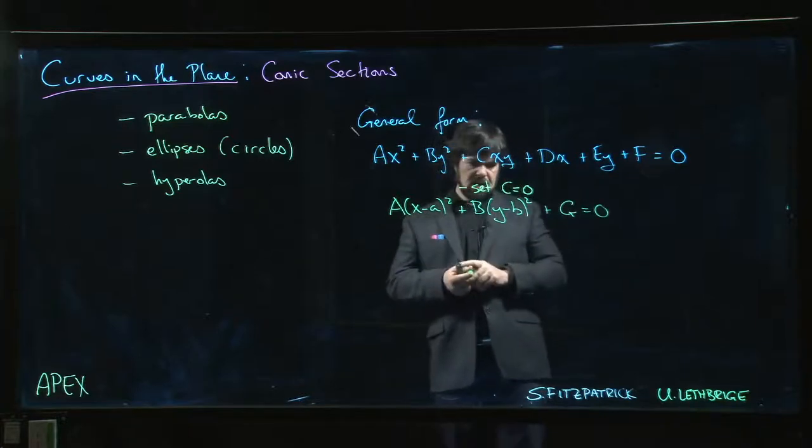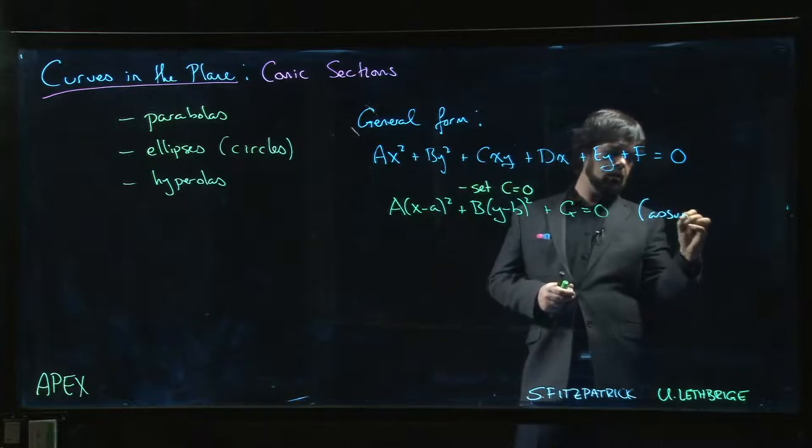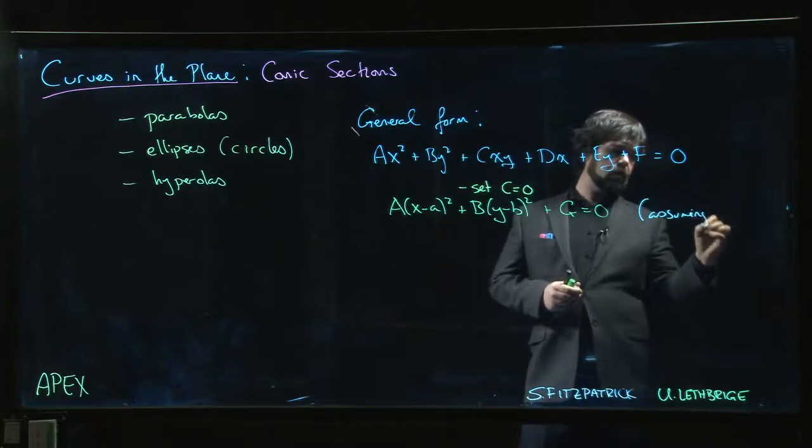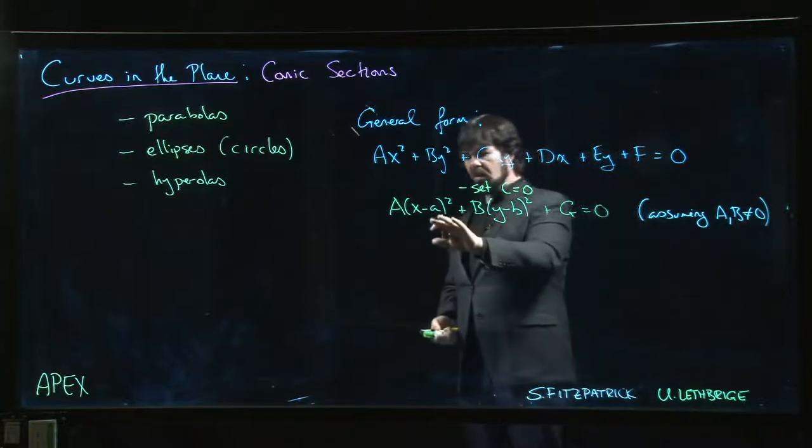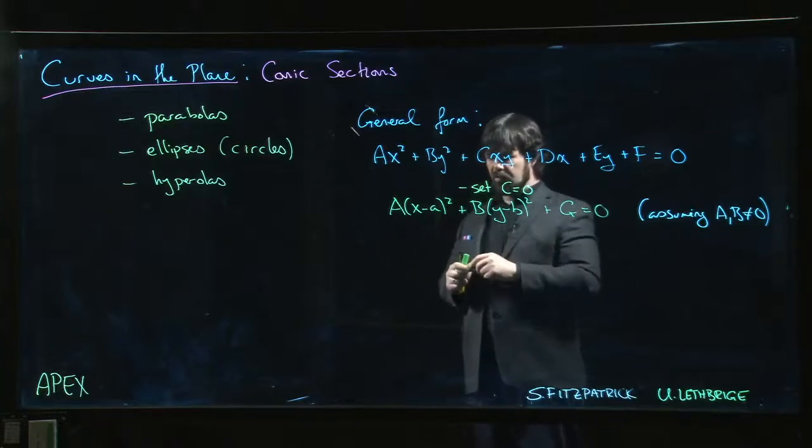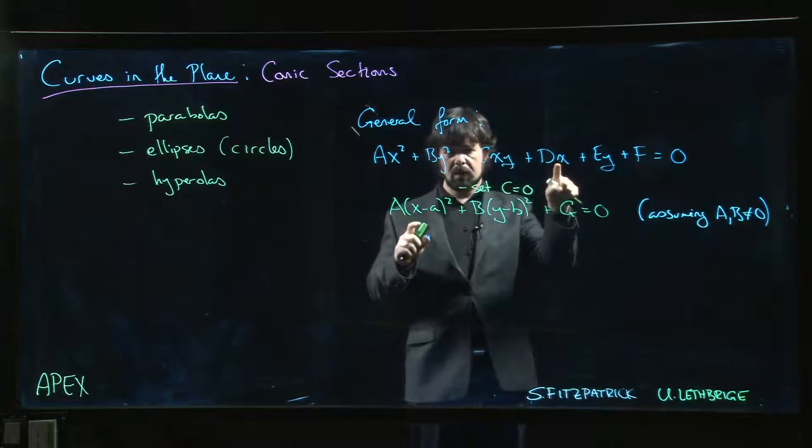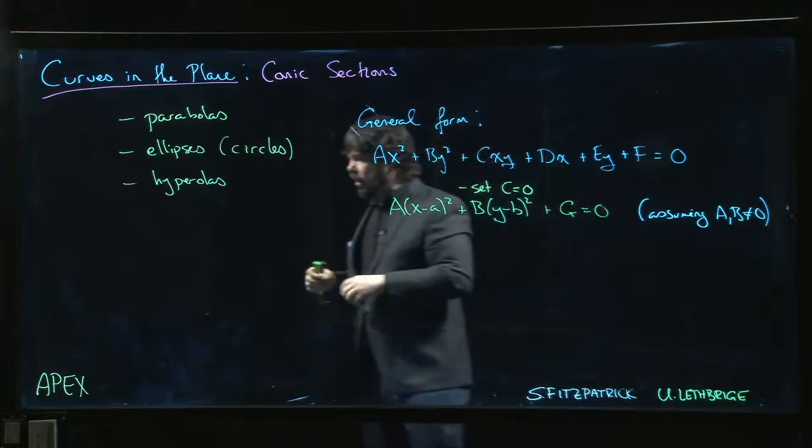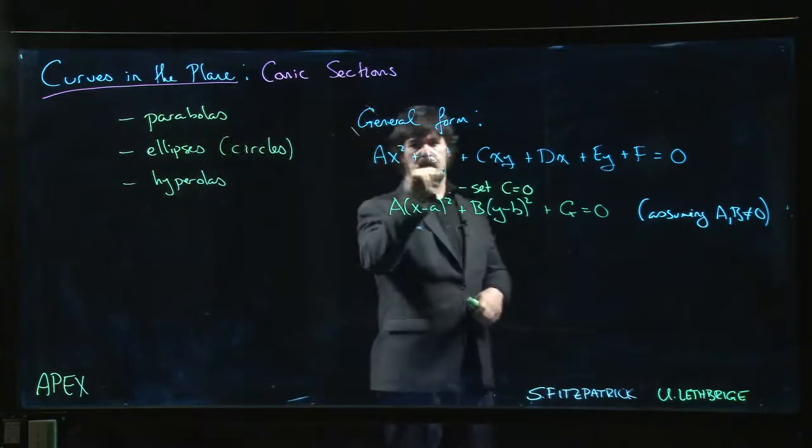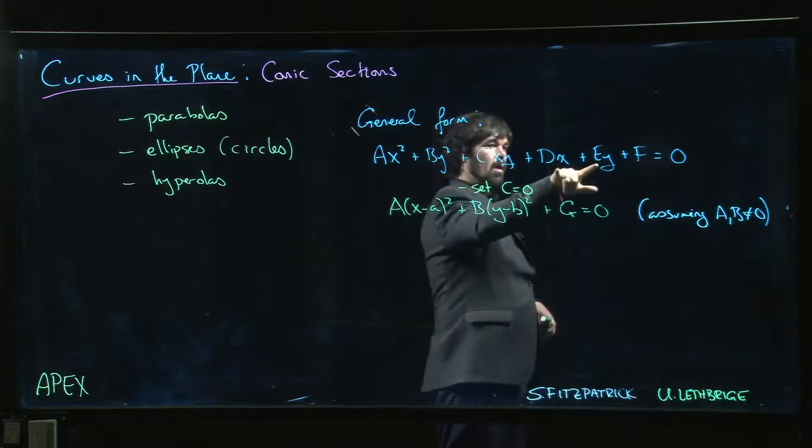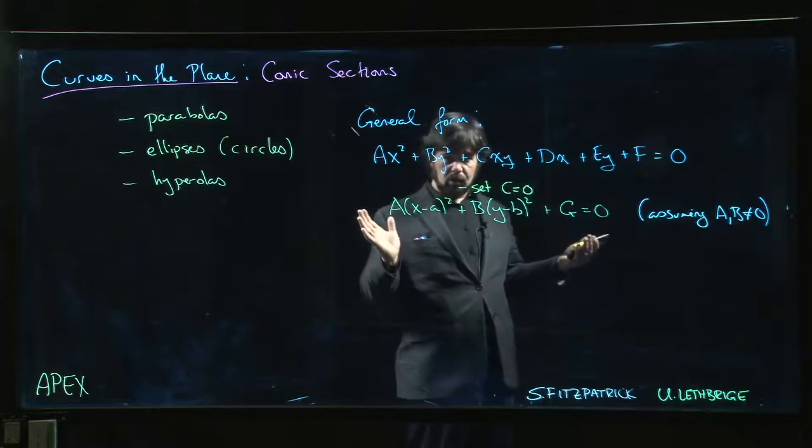Now there's a flaw with this - this is not quite valid if, say, A is equal to zero, because if A equals zero, I can't absorb that linear term. Parabolas are going to be exactly what happens when one of these two is zero - either A or B will be zero. The usual parabola like y = x² is a common parabola that we've already dealt with.